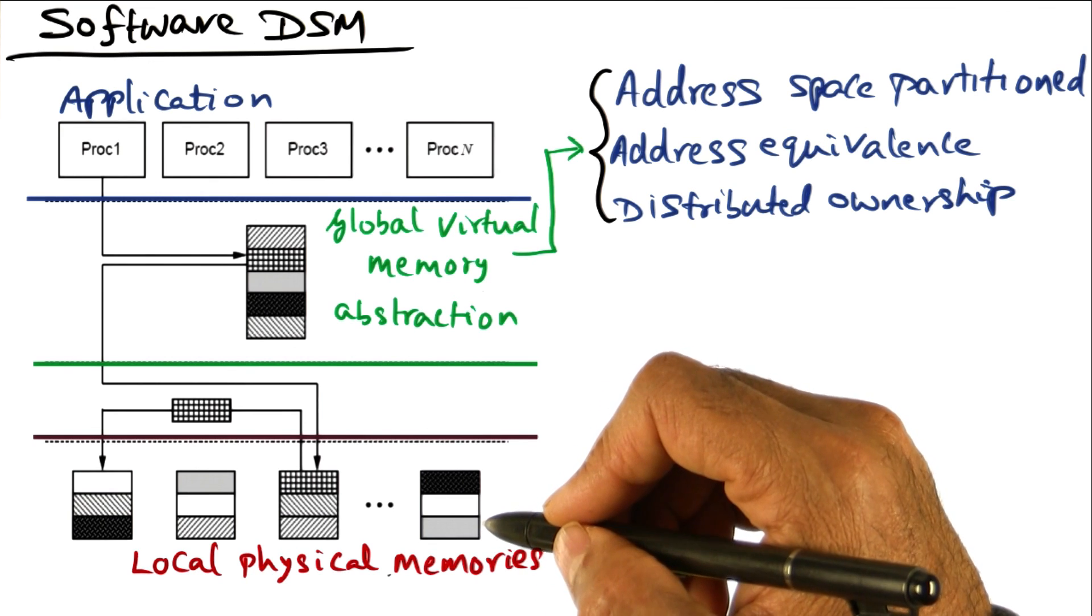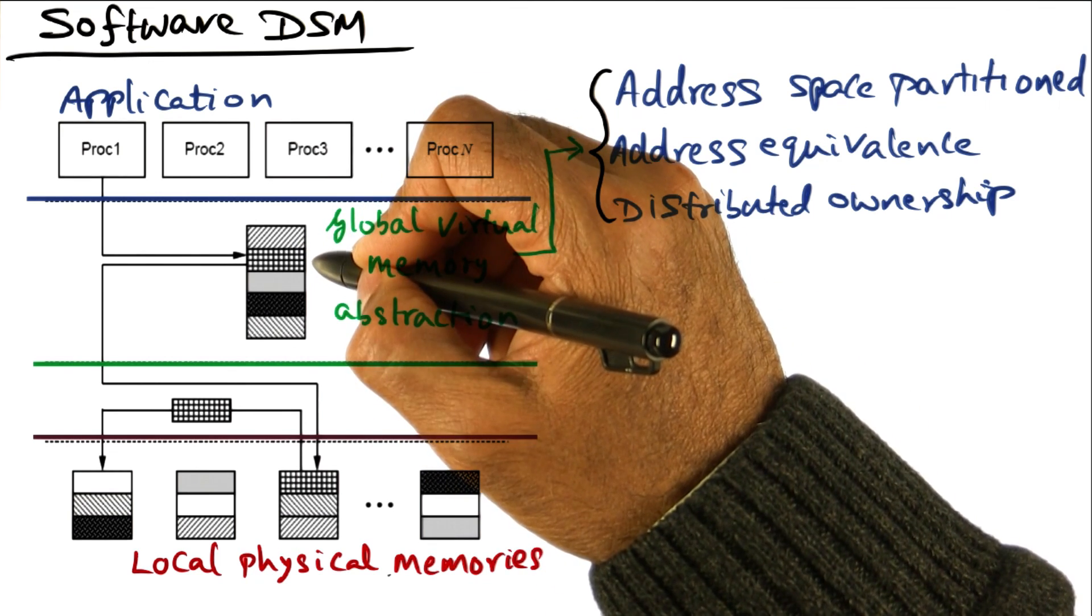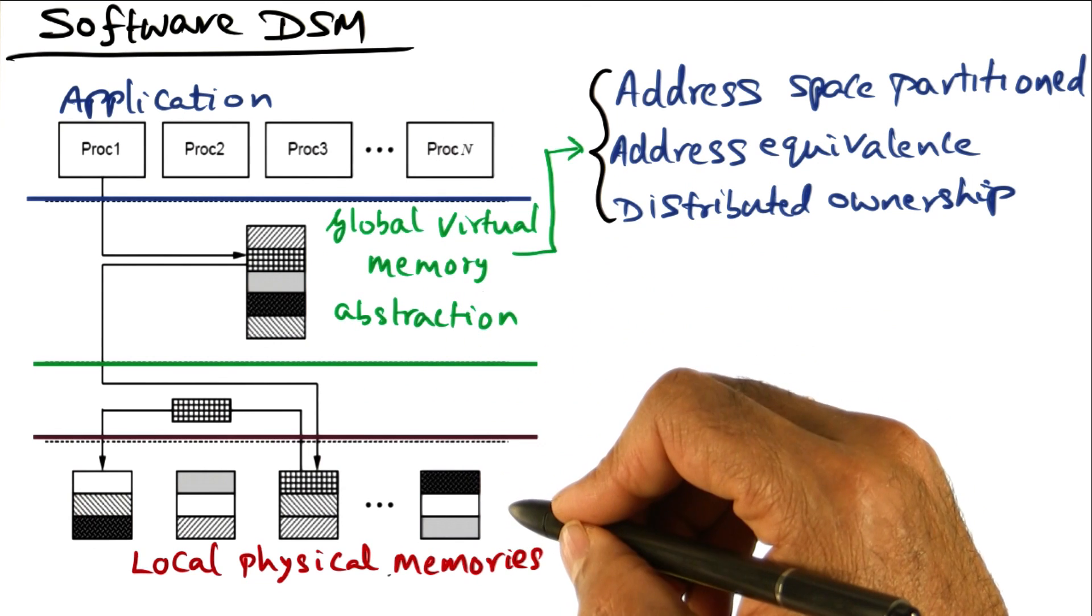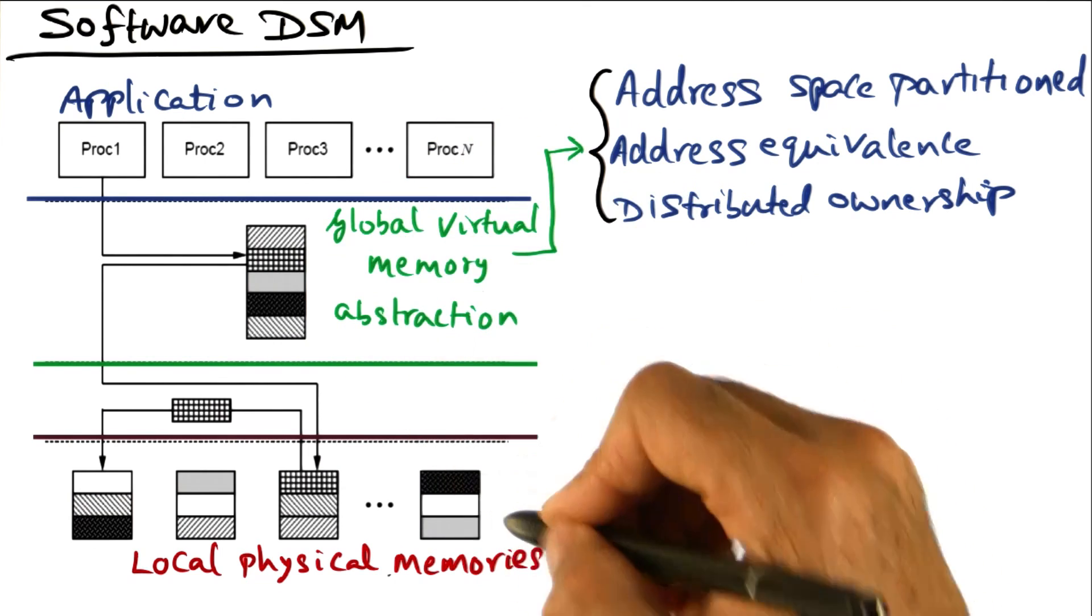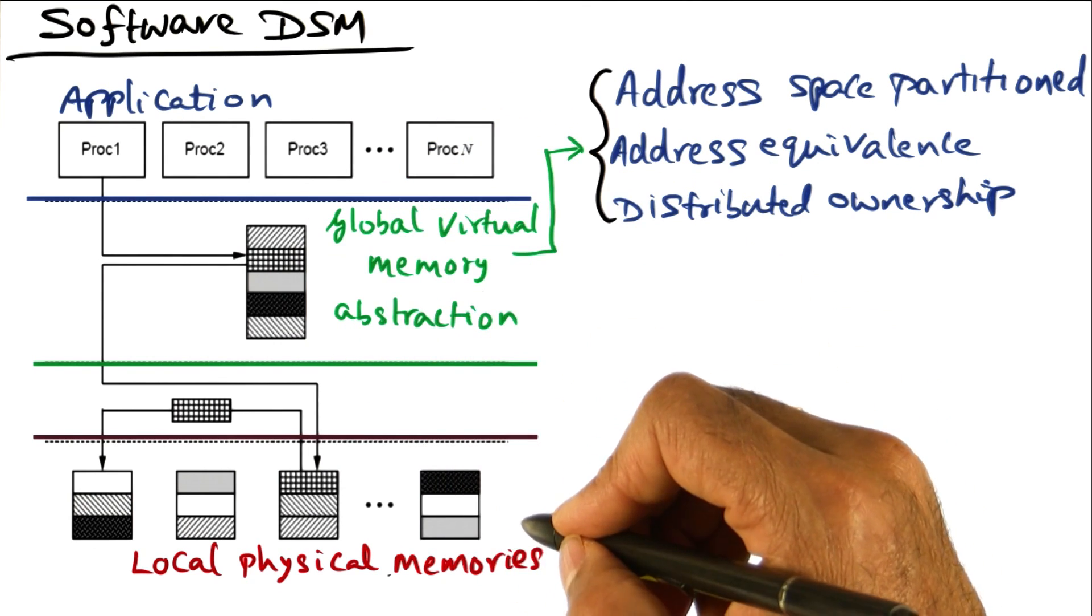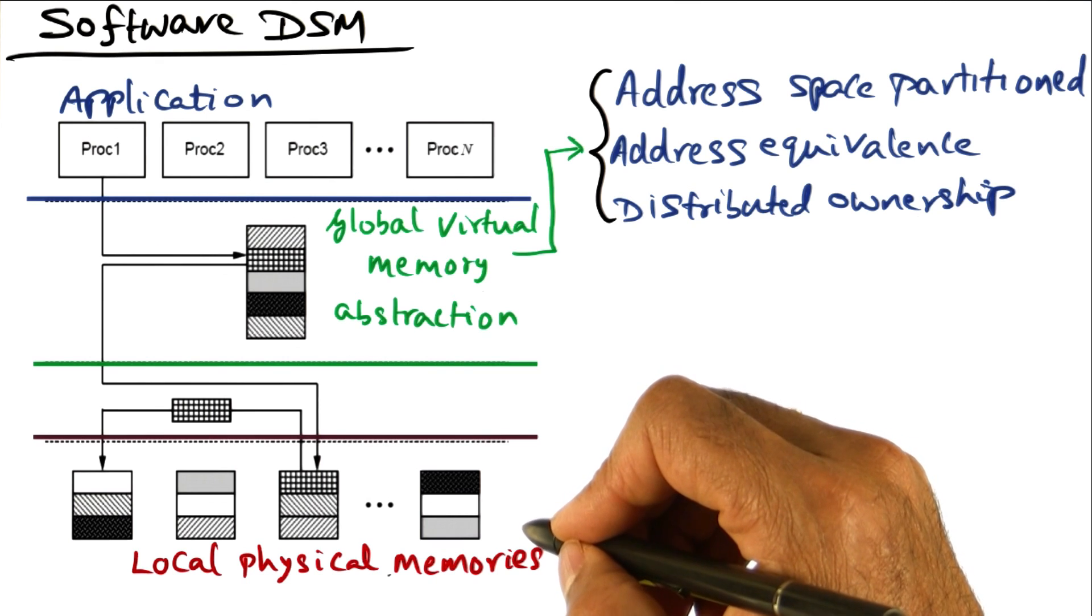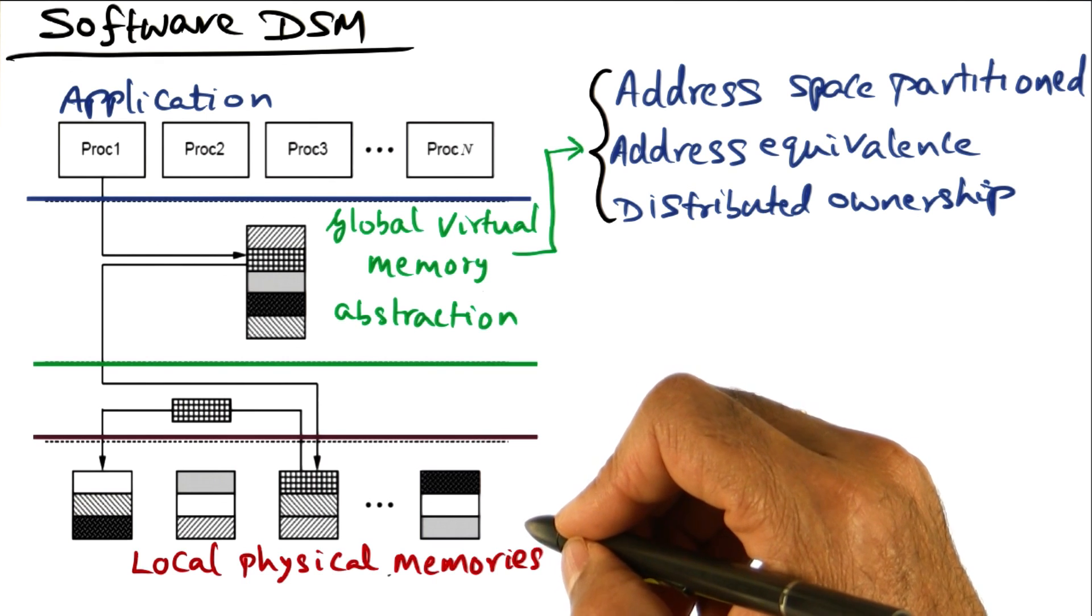So statically, we are making an association between a portion of the address space and the owner for that portion of the address space in terms of coherence maintenance for that portion of the global virtual memory space.